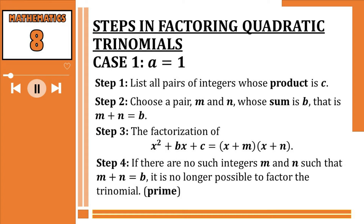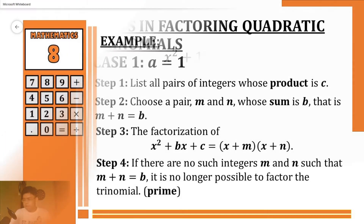We are going to list all the pairs or factors of the last term. Next, we're going to pick the pair whose sum is equal to our middle term — identify the pair of factors of c that when added equals our middle term. Then we're going to factor it.